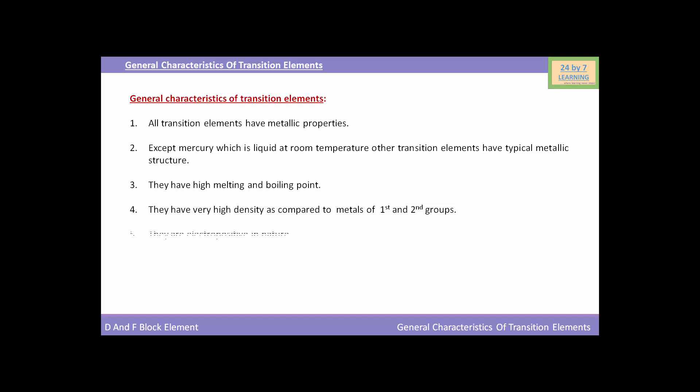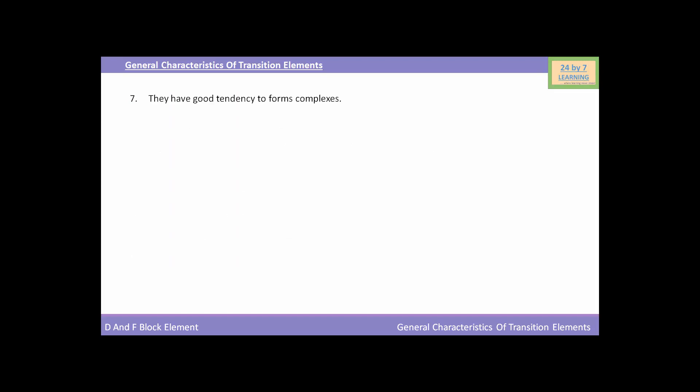They are electropositive in nature and most of them form colored compounds. Transition elements have good tendency to form complexes. They exhibit several oxidation states. They form alloys with other metals. Most of the transition metals and their compounds are used as catalysts.